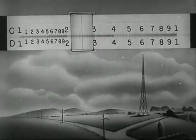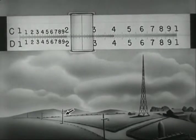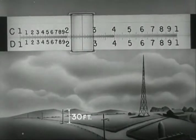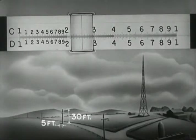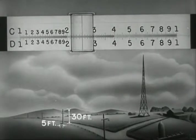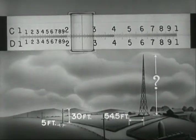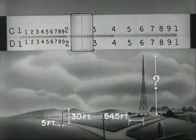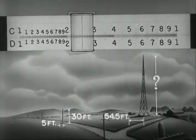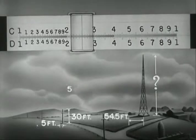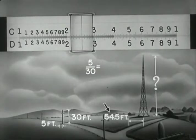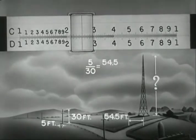Now to take a typical problem in proportion, here is a post 30 feet high, casting a shadow 5 feet long. The tower casts a shadow 54.5 feet long. How high is the tower? The problem may be stated in terms of proportion. 5 is to 30, as 54.5 is to x.